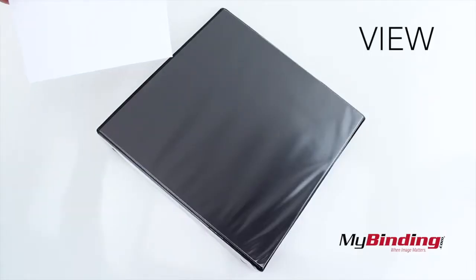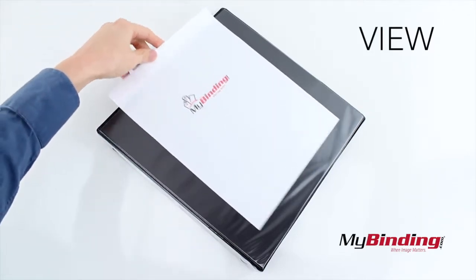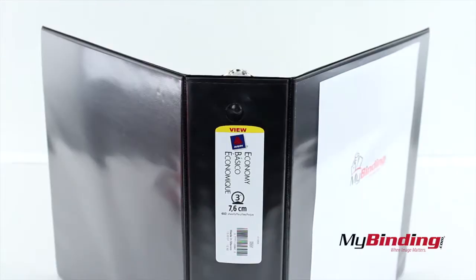The view binders have a clear plastic cover in which you can slip a page or pages, and you can do this on the front, back, and side.